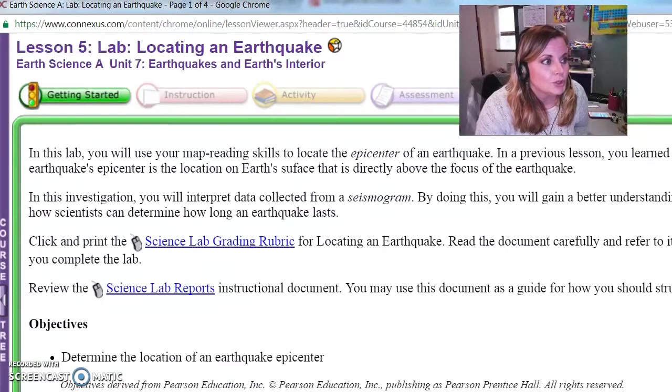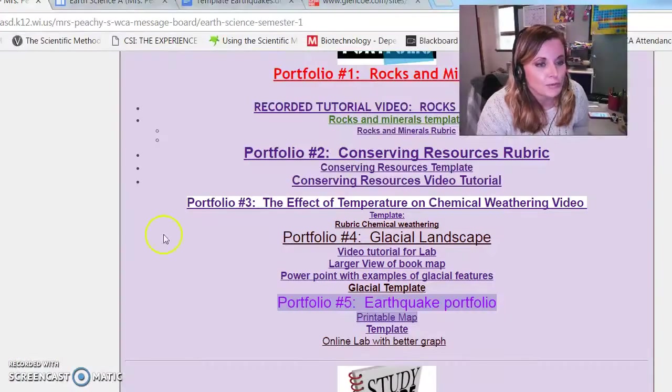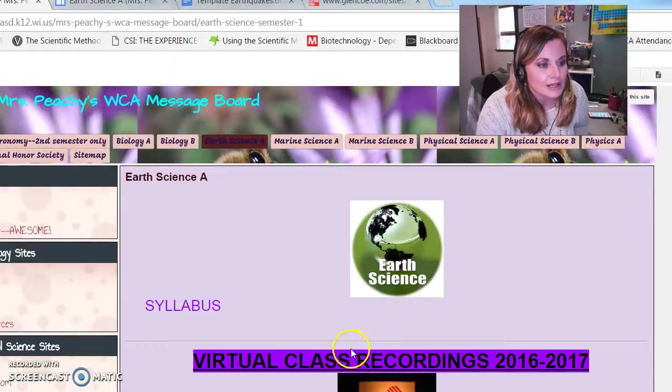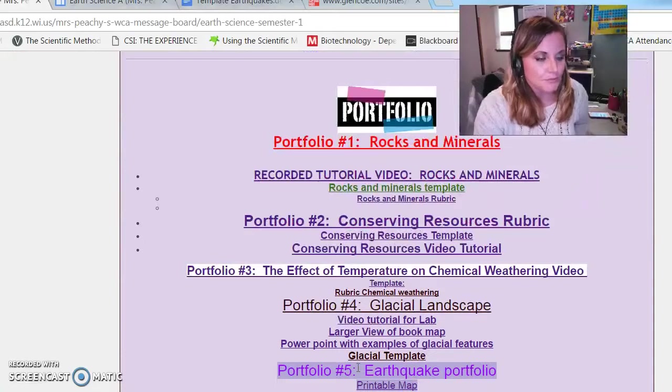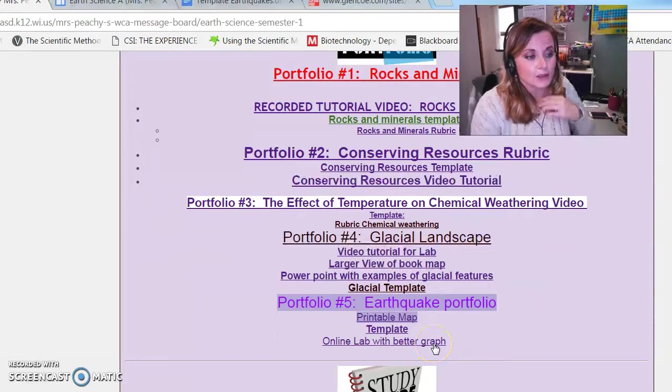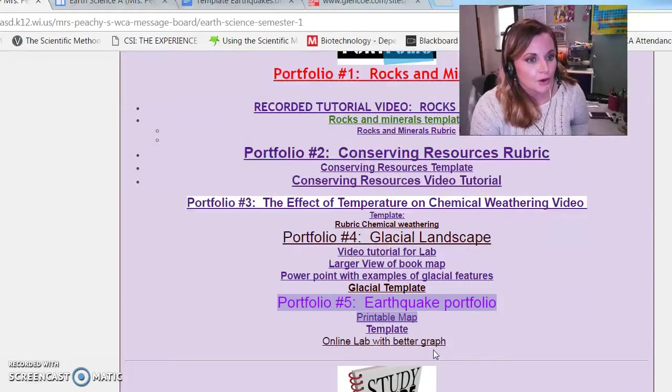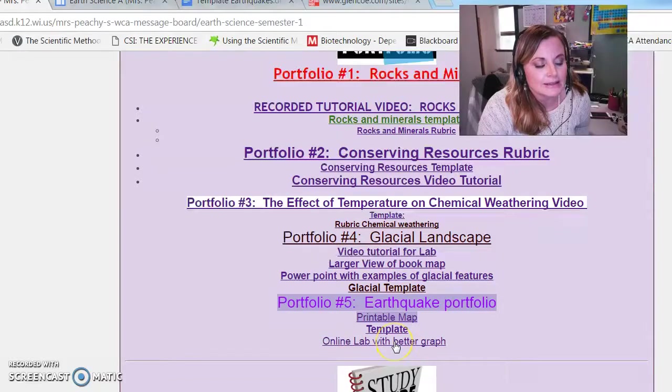So go to my website, which as you guys hopefully know is accessible through the message boards. When you get to the Earth Science website, scroll down to where it says portfolio, and then under portfolio you're going to see a couple of things that you will use today. You're going to see the template which is where you'll put all your answers, and then you'll see this thing that says online lab with better graph. So hopefully that's going to cue you in that that's the lab that I want you to work on.